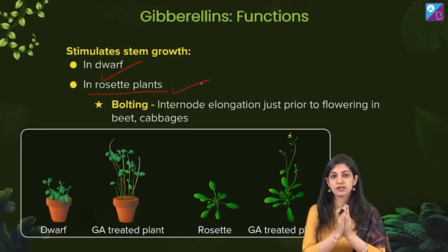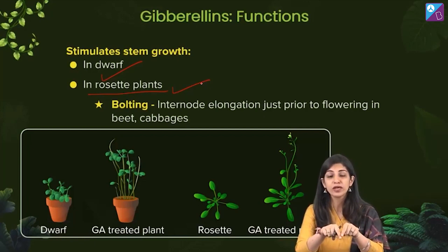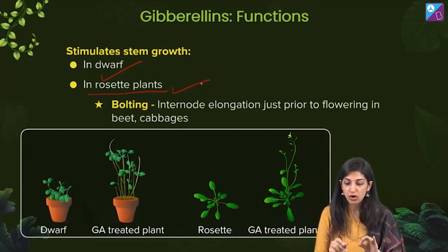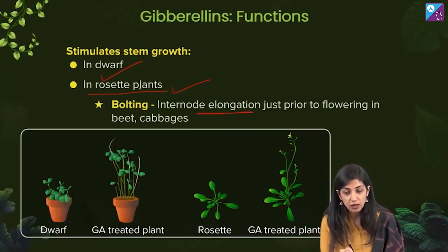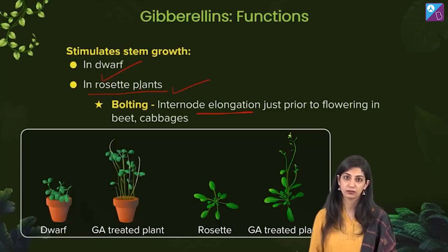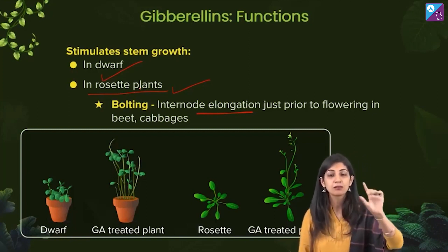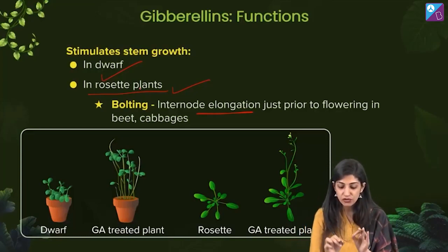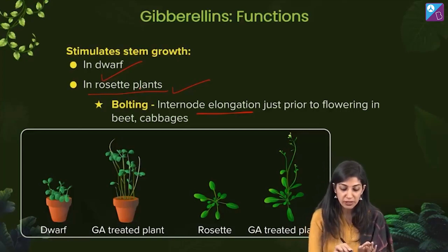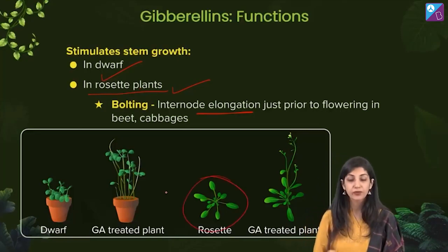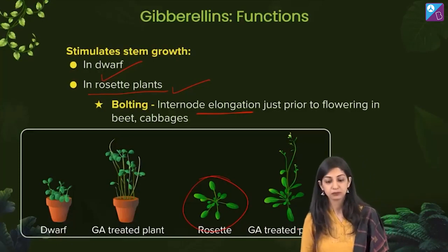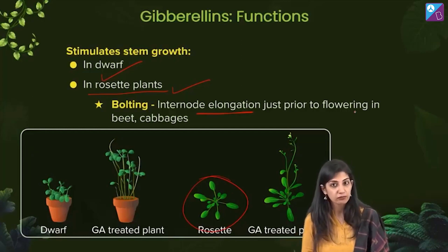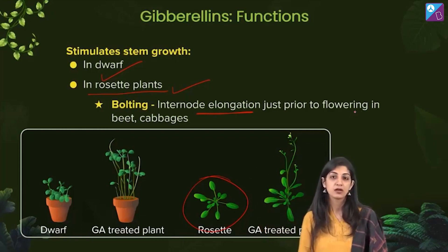Now, when gibberellins cause internode elongation in rosette plants, it is called bolting. Bolting is internode elongation just prior to flowering in beet and cabbages. Here is a rosette plant growing in a circular fashion, and this is a GA-treated plant — it assumes a length. We say 'prior to flowering' because that is when the plant reaches the reproductive phase; the stem grows in the vegetative phase.